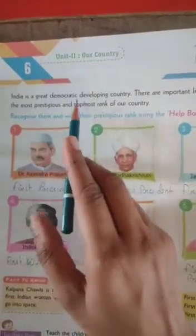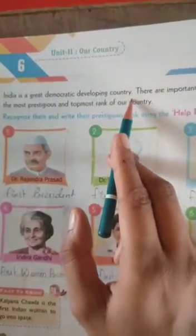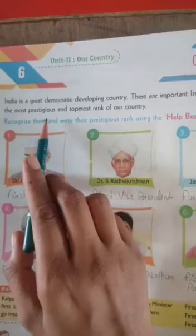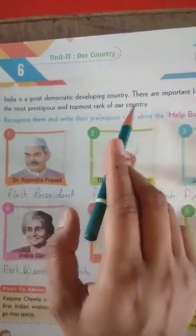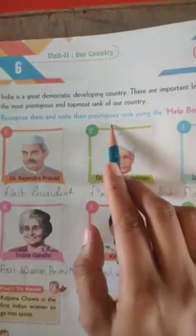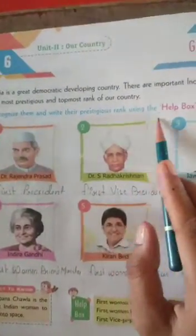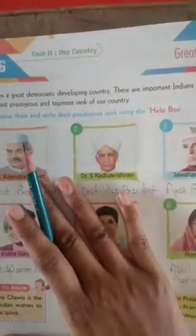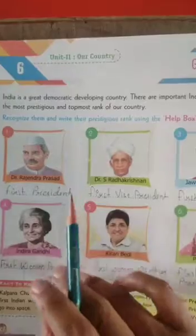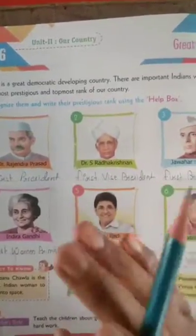Great Indians — India is a great democratic developing country. There are important Indians who have been honored with the most prestigious and topmost ranks of our country. Recognize them and write the prestigious rank using the help box. You have pictures and names of India; you have to mention in which rank, in which post.